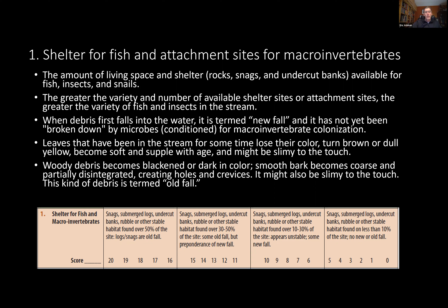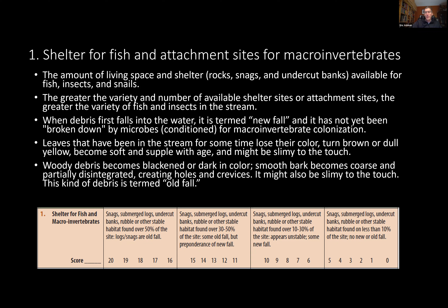Using new fall vs. old fall in scoring: if you find snags, logs, undercut banks, rubble, and stable habitat that's mostly old, that's optimal. Finding some of that but mostly new is suboptimal. Only a little, looking unstable with a little new and really no old, is marginal. Very little of those habitat types with nothing new or old is poor.